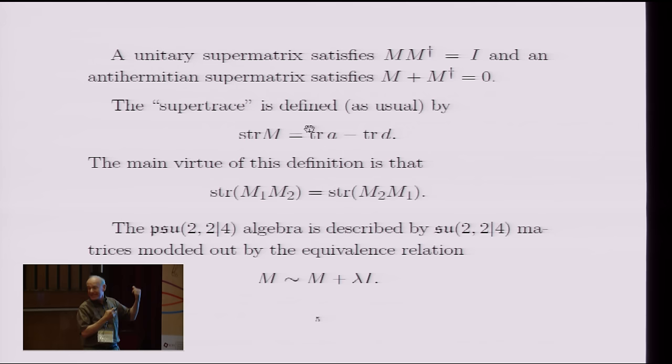So the reason this is a good definition of the super adjoint is that with this definition, you have this nice looking formula, which properly takes account of the fact that B and C are Grassmann odd. So a unitary supermatrix is then just one for which M M^dagger is the unit matrix with this definition of the adjoint.